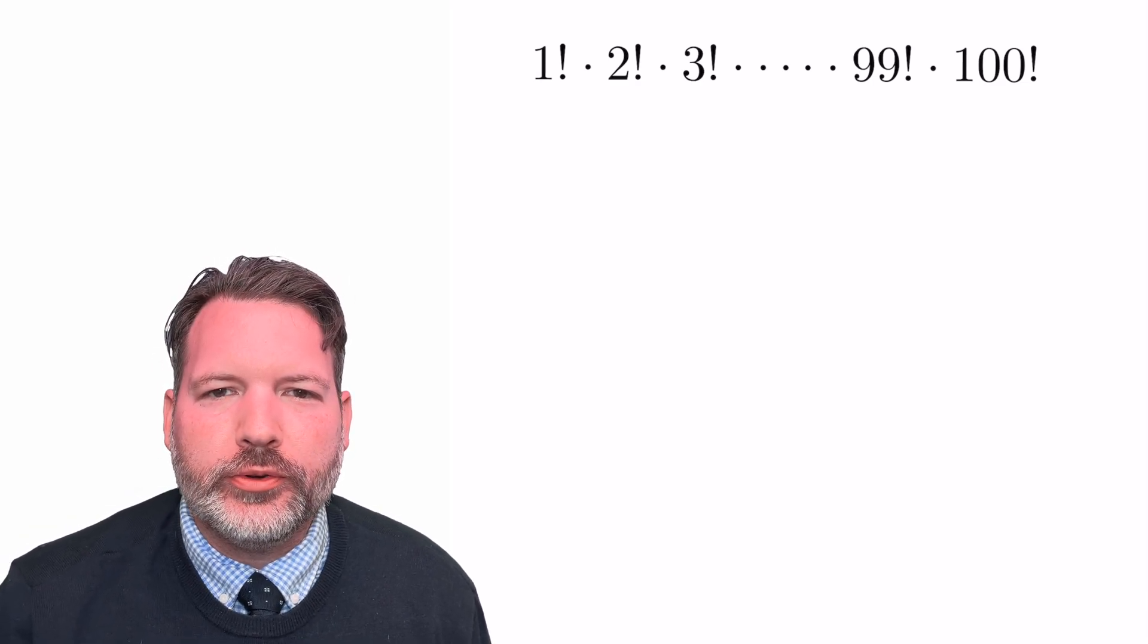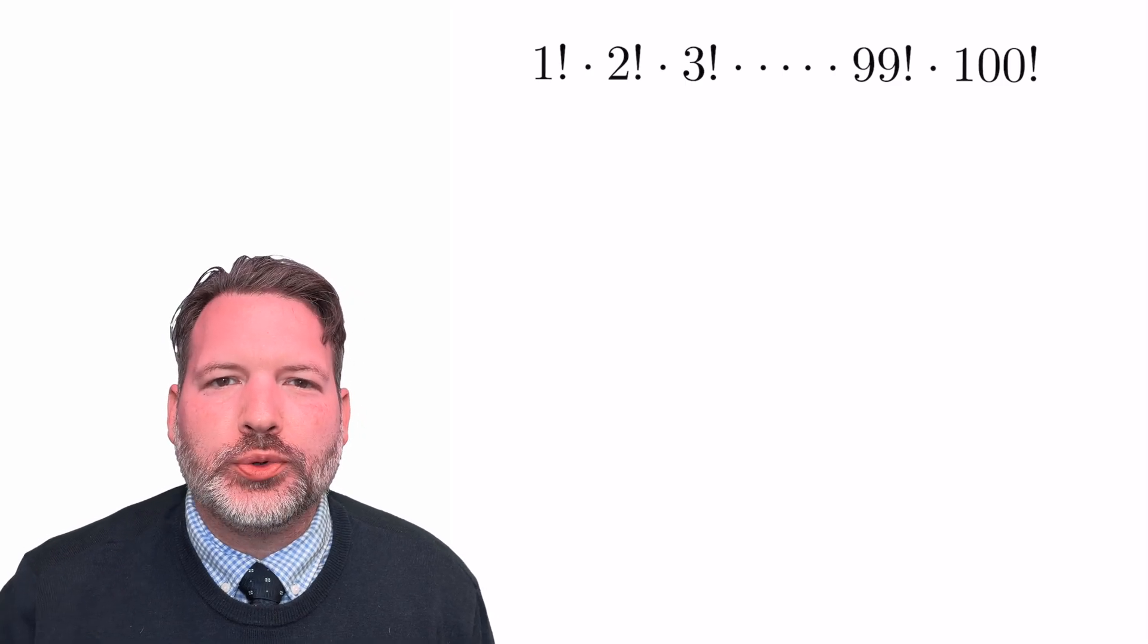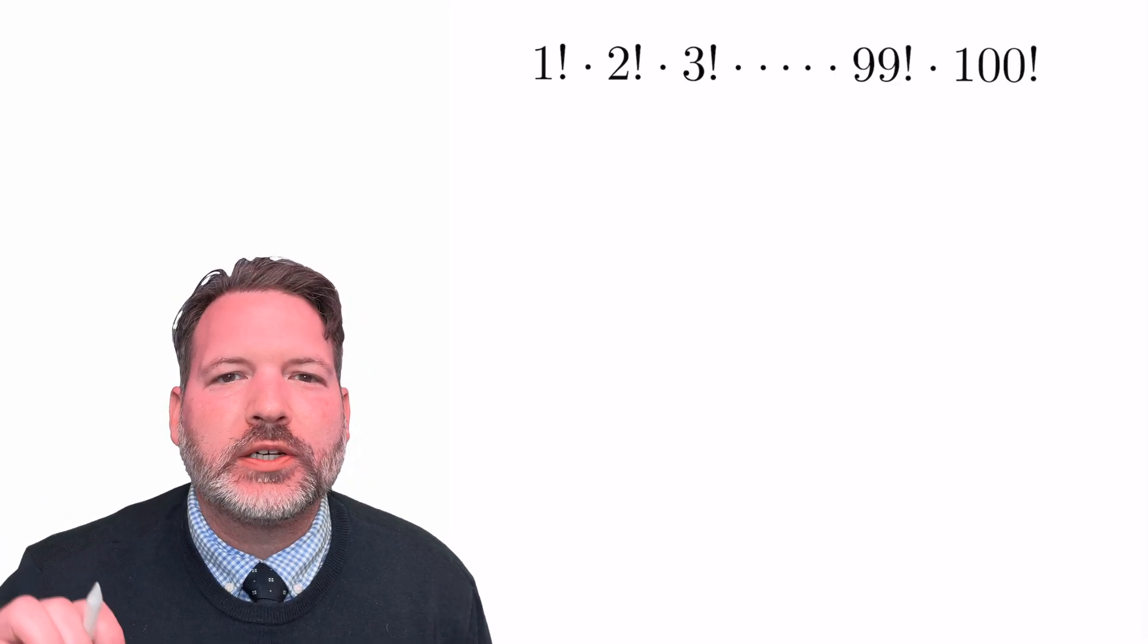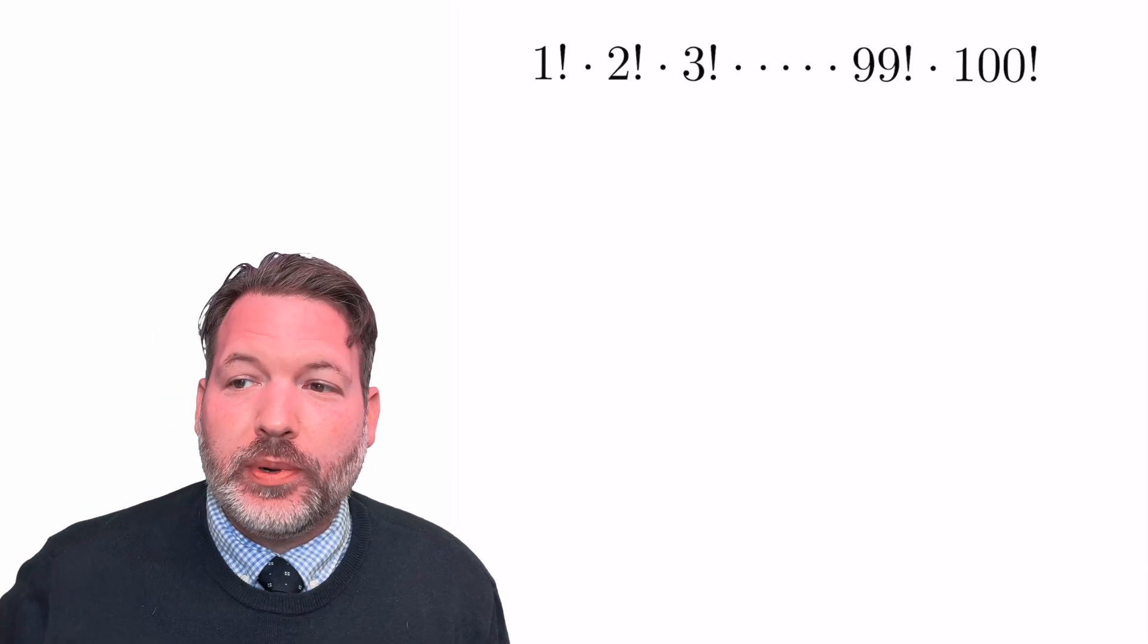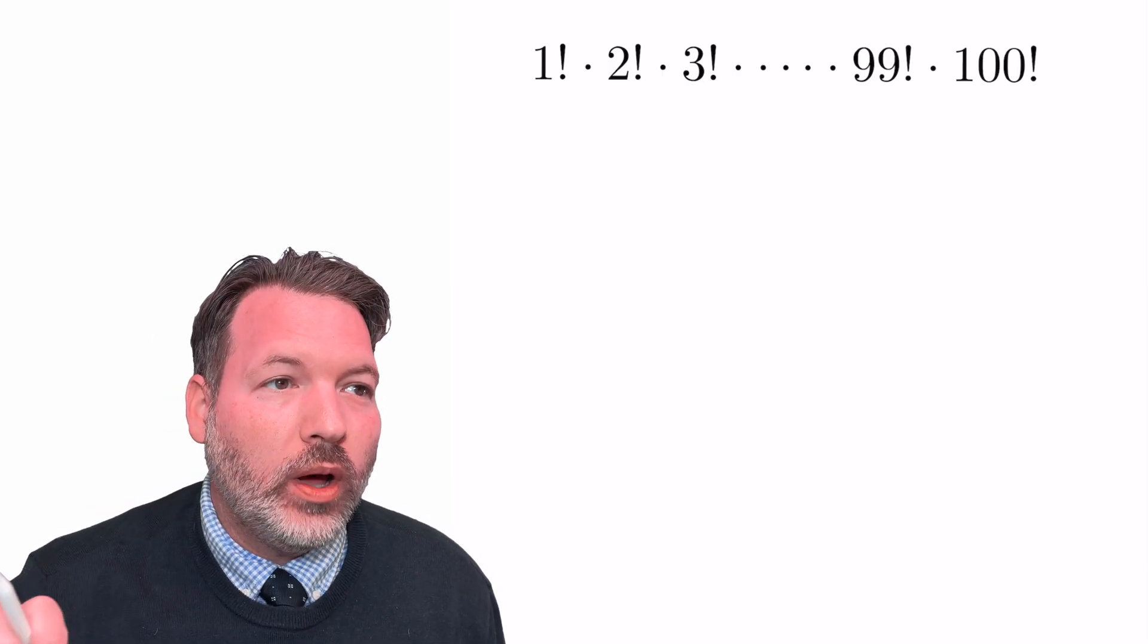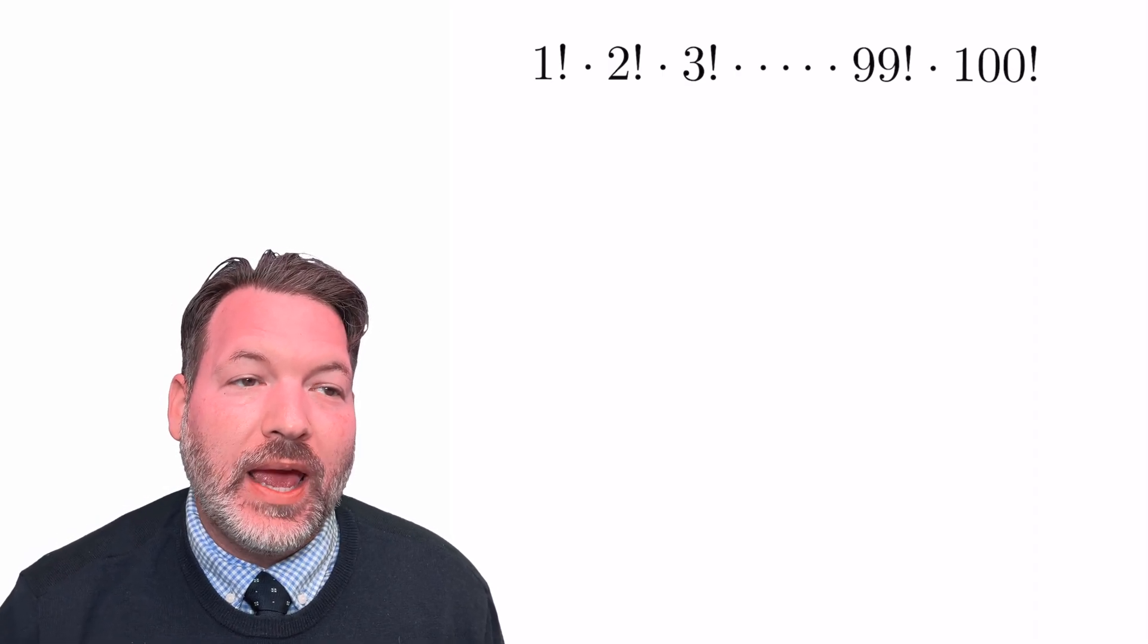Hey guys, I've got a killer problem for you today. What if we took the product of a bunch of different factorials—1 factorial, 2 factorial, 3 factorial, all the way up to 100 factorial—we multiplied all of those together, is there one of them that we could take away that would make that overall product a perfect square?